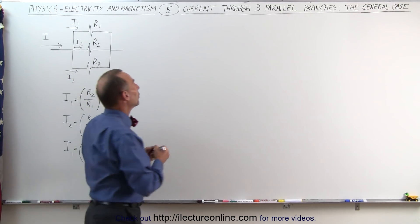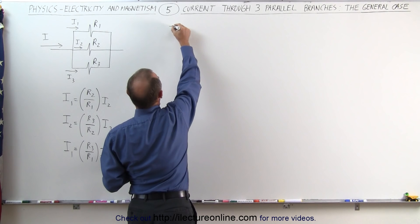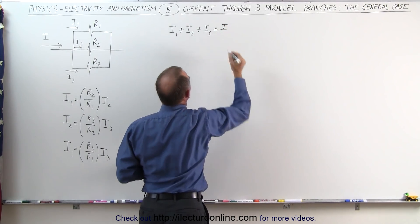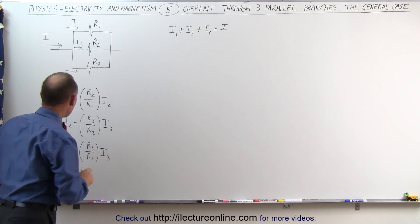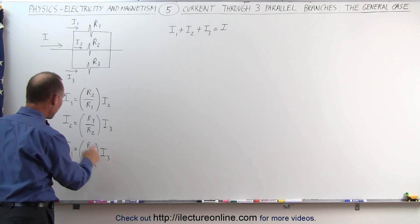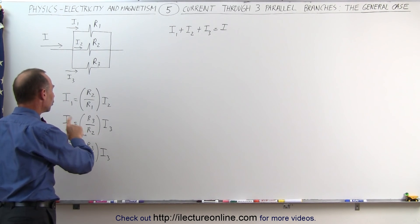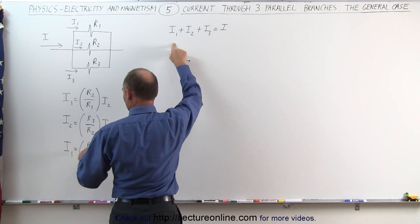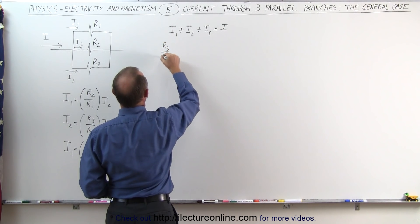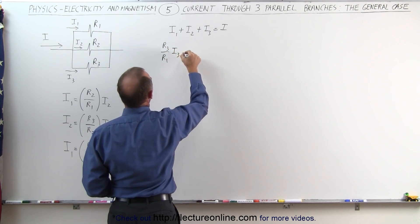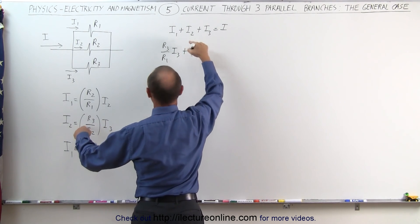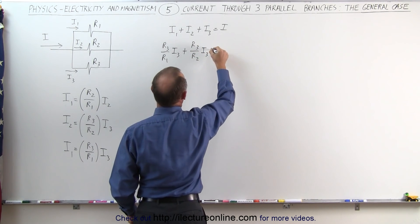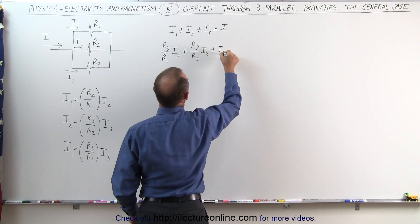Now we go to the point that the sum of the currents — I1 plus I2 plus I3 — must equal the total current entering the branch point. Notice that we have I1 written in terms of I3 and I2 written in terms of I3, so we can plug those values in. I1 becomes R3 divided by R1 times I3, and I2 becomes R3 divided by R2 times I3, plus I3, and this equals I.